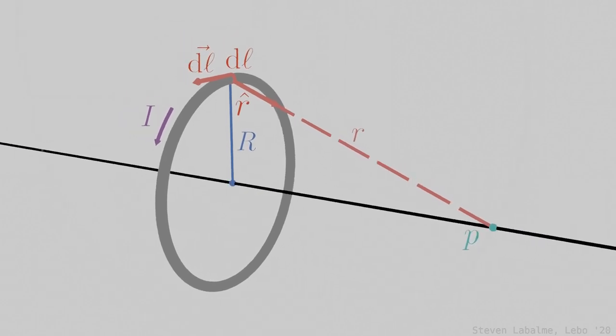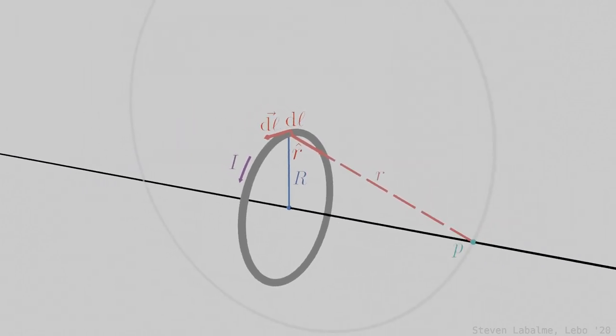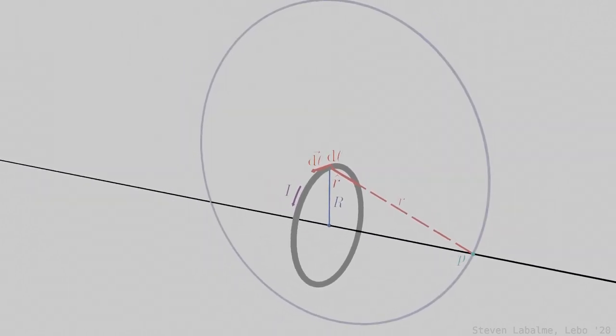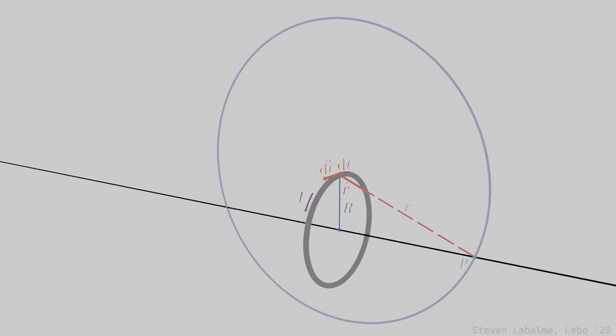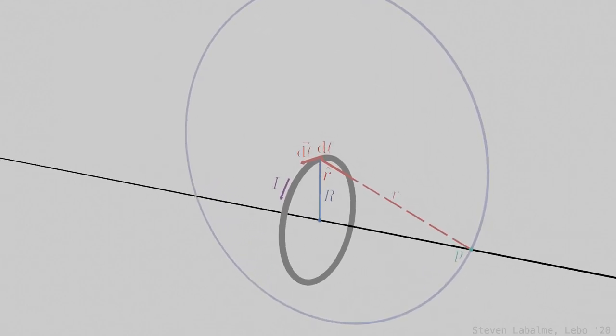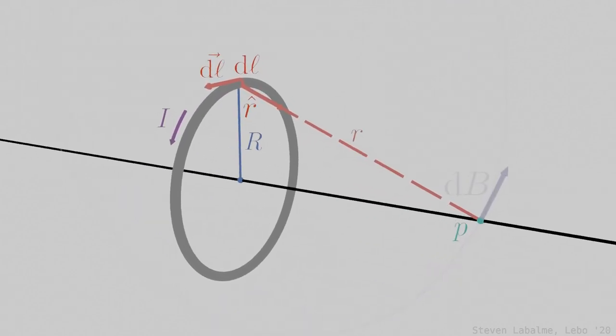Then, drawing a circle around the vector centered at the sliver dl and with a radius r such that it touches point P. Considering vectors tangent to the circle that follow the right-hand rule, it becomes clear that the infinitesimal magnetic field dB caused by dl can be represented by this vector.